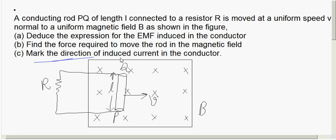To find the direction of induced current, we use Lenz's law: the induced EMF opposes the very cause producing it. The cause here is the increase in cross magnetic field (into the page) as the conductor moves towards the right.